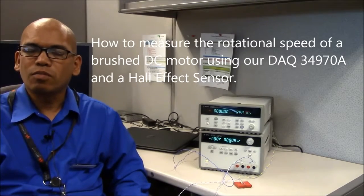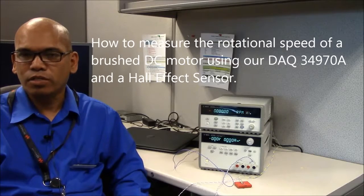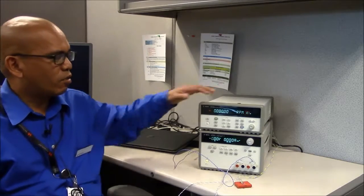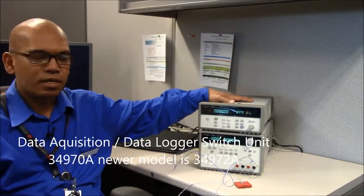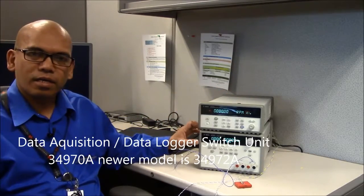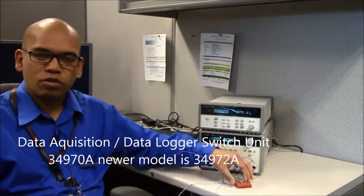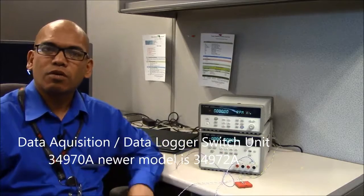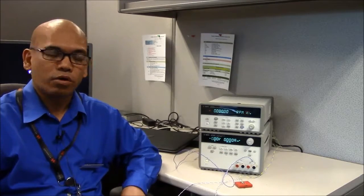In this video I'm going to show you how to measure the rotational speed of a brush DC motor using our DAQ 34970A and a power supply. We'll also use a Hall effect sensor to measure the rotational speed of the motor.